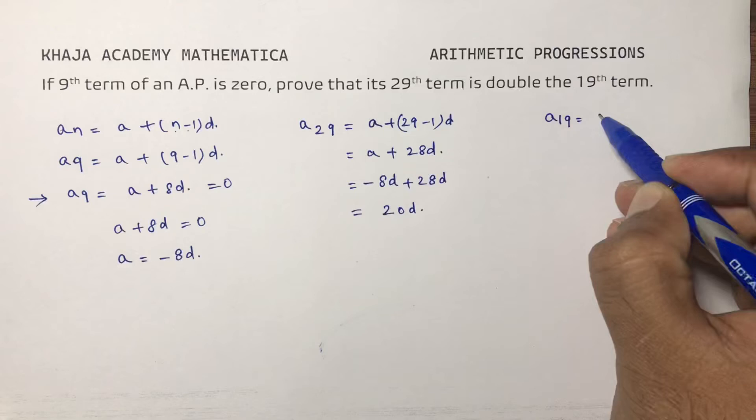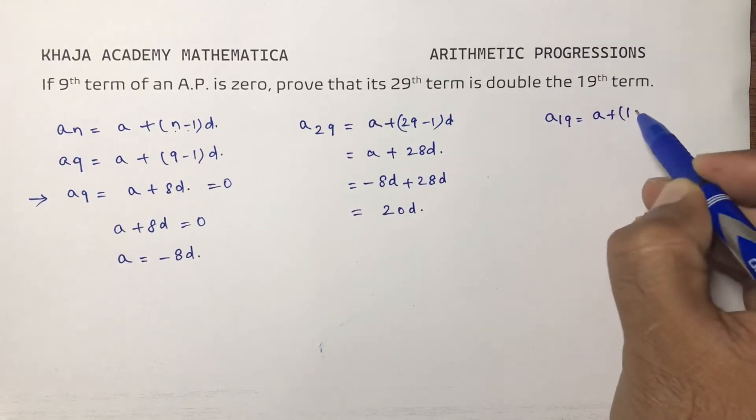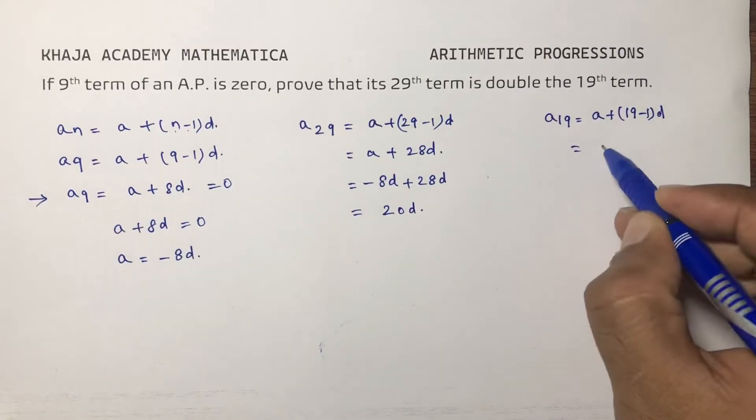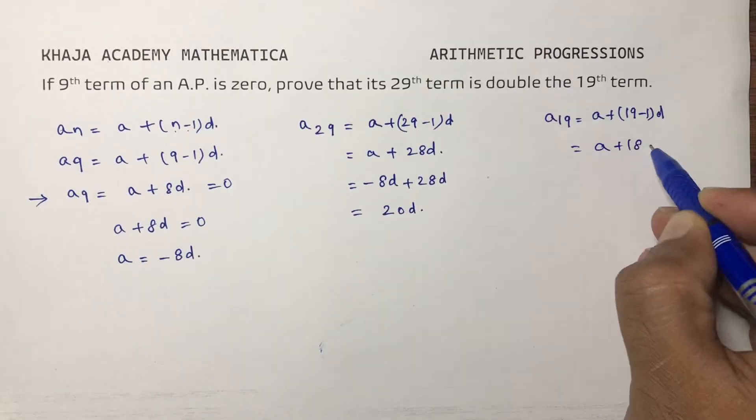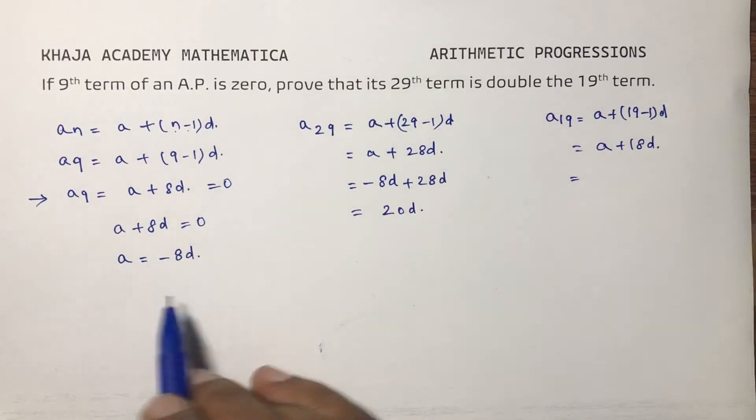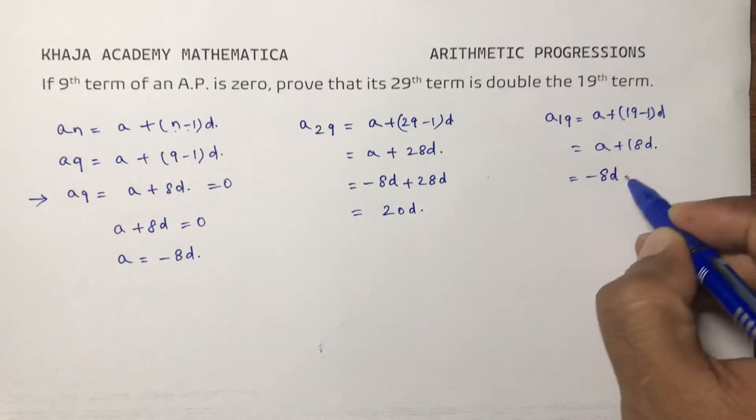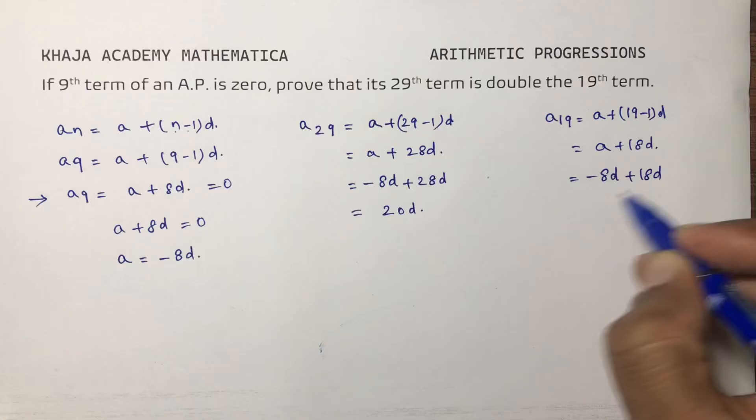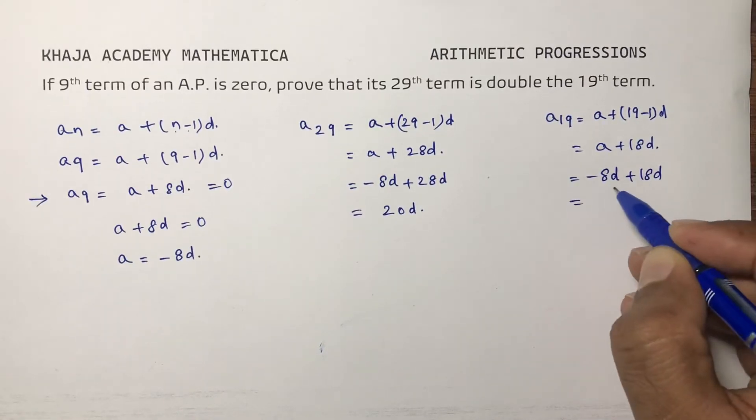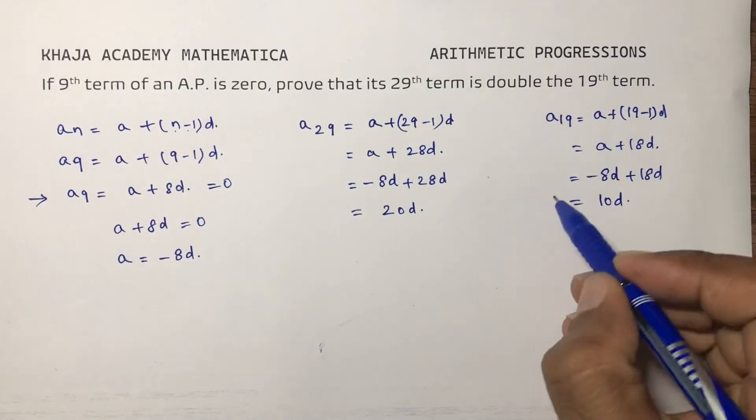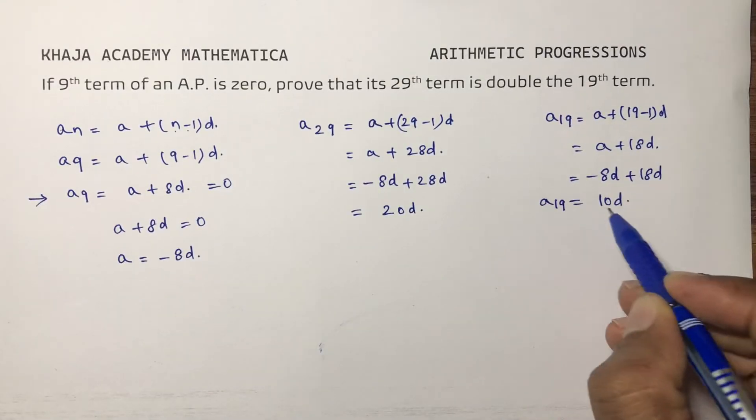A19 will be A + (19-1)D, which equals A + 18D. A is -8D, so -8D + 18D. Here -8D + 18D is 10D. So A19 is 10D.